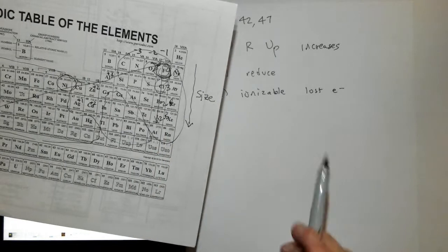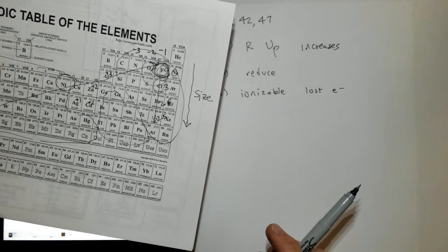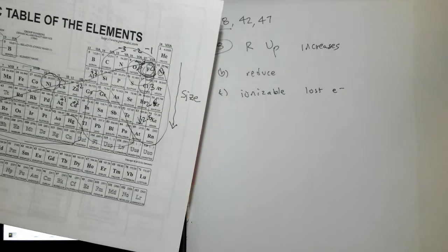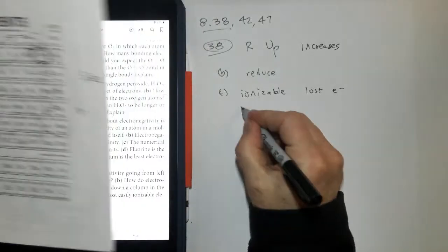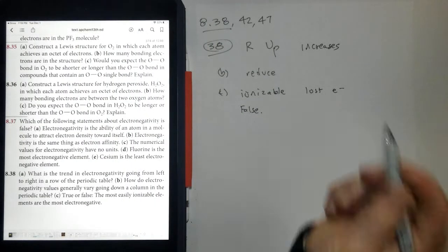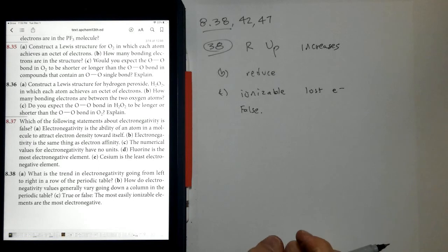Of course, fluorine has no desire whatsoever to lose an electron. It just wants to get electrons because it's the most electronegative. So this is false. They are not the most easily ionizable; they are the most difficult to ionize.